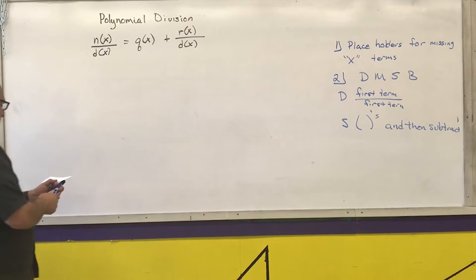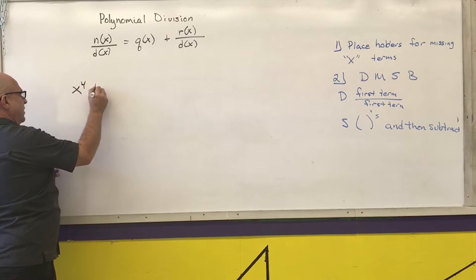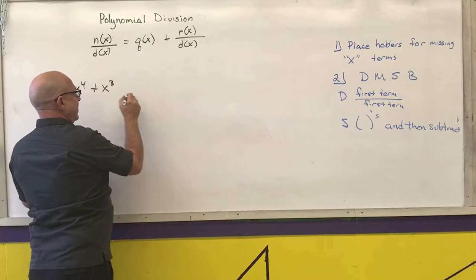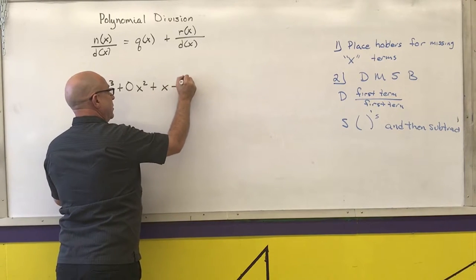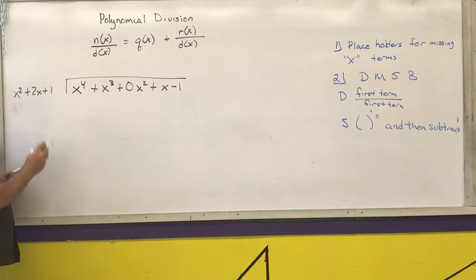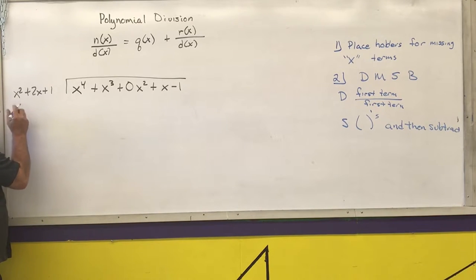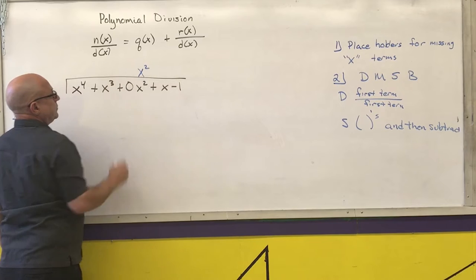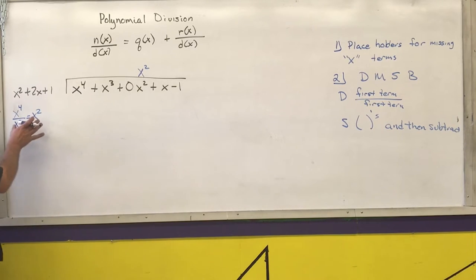Next example: x to the fourth plus x cubed plus 0x squared plus x minus 1, divided by x squared plus 2x plus 1. I needed to put a placeholder for the missing x squared term. Leading term over leading term: x to the fourth over x squared is x squared, which goes over the x squared column.